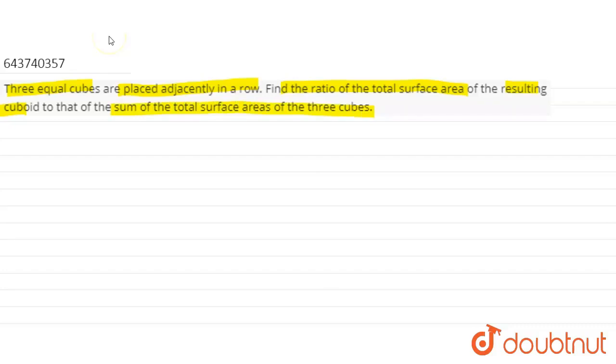Okay, so in this question we are given a cuboid comprising of three equal cubes. So these cubes are like this placed on a horizontal surface. So let us say that the length, breadth and height of each cube is A.